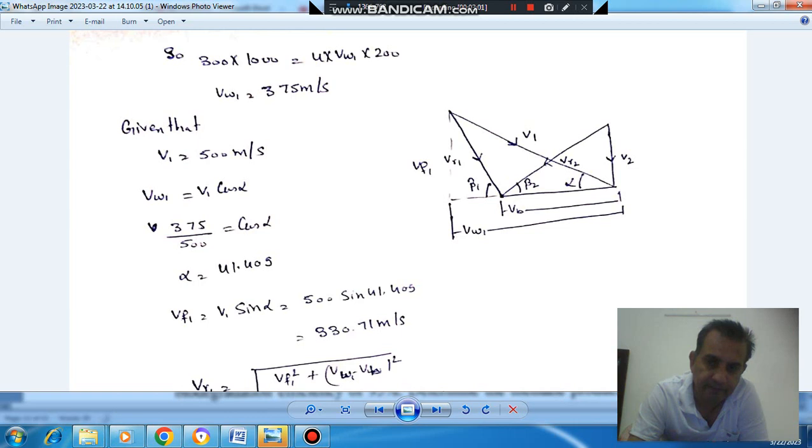And this is nozzle angle at inlet and this is blade angle at inlet. The angle made by absolute velocity is nozzle angle or guide vane angle and made by relative velocity is blade angle.